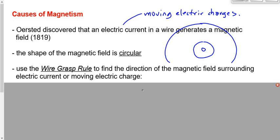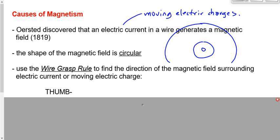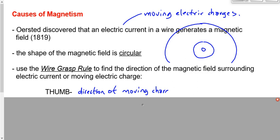Here's what you have to do to figure out the direction of the magnetic field — which is a series of concentric circles surrounding moving charges or electric currents. You're going to take your thumb. Put your fingers and your thumb at 90 degrees to each other, just like this. Put your thumb in the direction of the moving charge — or the direction of the electric current, because moving charges are electric current.